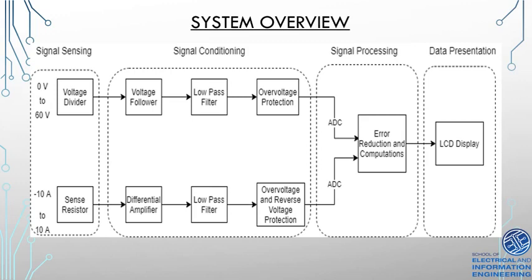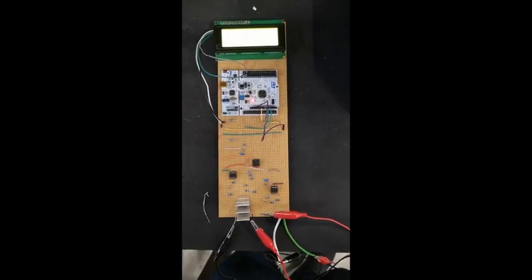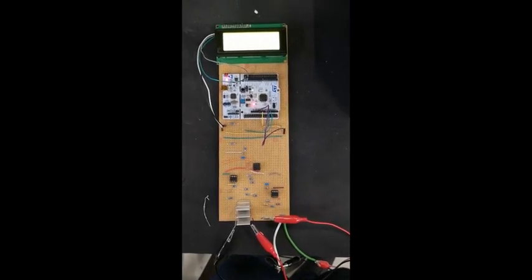Over-voltage and reverse-voltage protection is implemented. The voltage is measured using a voltage divider, with the output to a voltage follower. Noise cancellation is also performed using a low-pass filter. Over-voltage protection is also implemented. Signal processing is performed using an STM32L476 microcontroller, which has an input ADC voltage range of 0 volts to 3.3 volts. This is the physical construction of the DC Bidirectional Energy Meter.